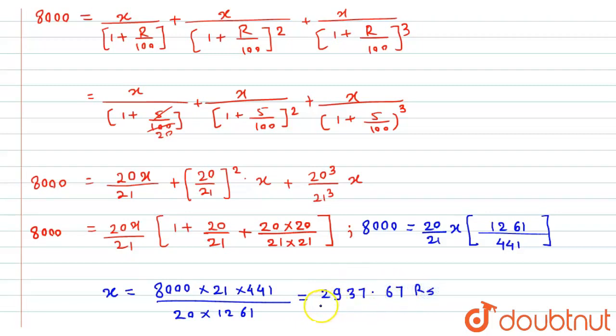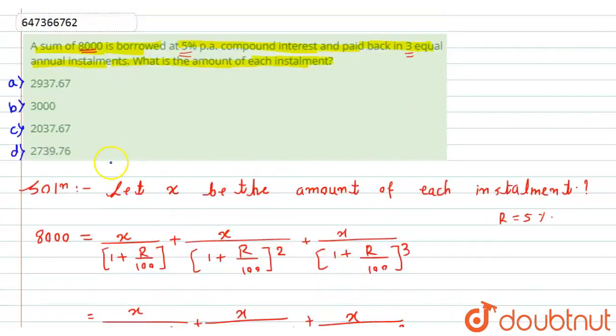So each installment kitni hogi jayegi? 2937.67 rupees. Thik hai? So, if we will try to match with the given option, option A will become correct answer for this question. So, this is the required solution. Thank you.